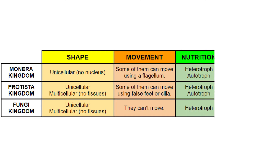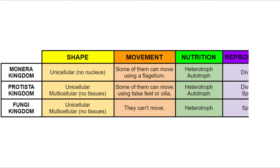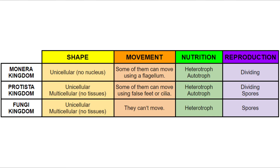In nutrition: some Monirans are heterotrophs and others are autotrophs. Some protists are heterotrophs and others are autotrophs. And all fungi are heterotrophs. Finally, in reproduction: Monirans reproduce by dividing. Some protists reproduce by dividing and others produce spores. And fungi produce spores to reproduce.